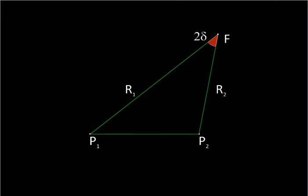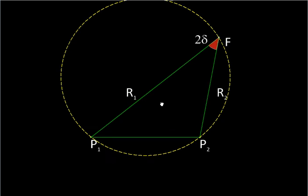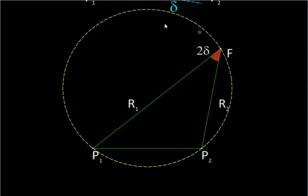Well, that happens in a circle. If we have a circle like this passing through P1, P2, and F, then P1 P2 is a chord and that chord will subtend a constant angle at any point on this circle. So the point F must be moving along a circle.